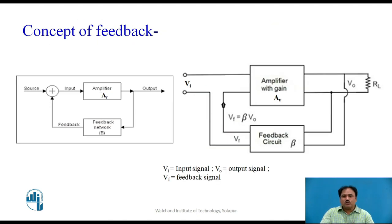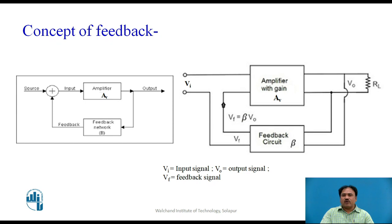Now, what is feedback? This diagram shows how feedback is achieved in the circuit. On the right-hand side you can see two blocks: one is the amplifier with a voltage gain called Av, and the other is the feedback network called beta. The input is the voltage Vi and the output is voltage Vo. The voltage Vo is fed back to the feedback circuit having beta as the feedback factor, which modifies the output by the factor beta. Normally beta has a value less than one.